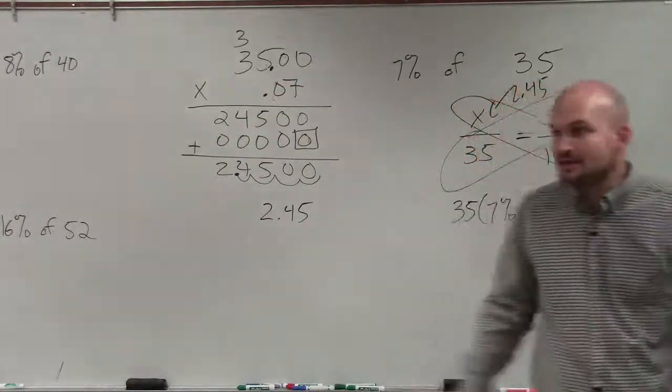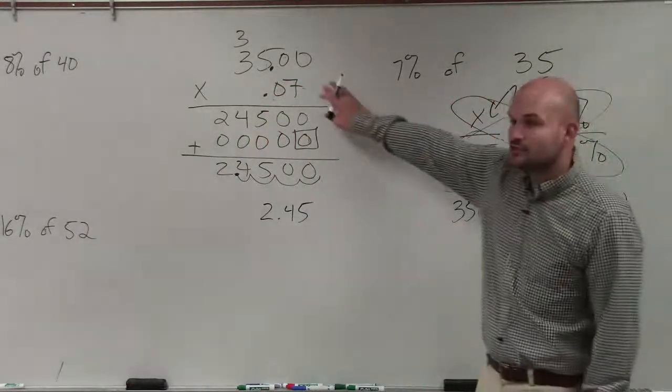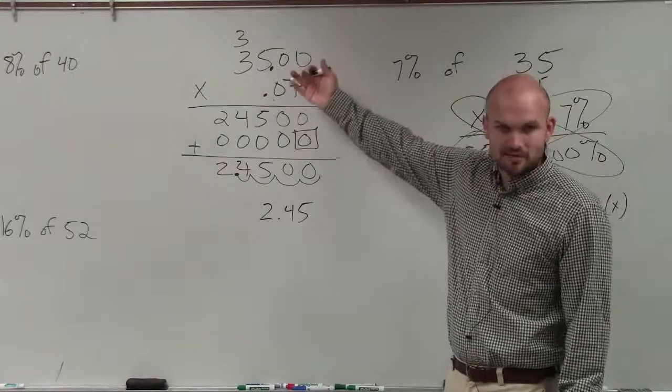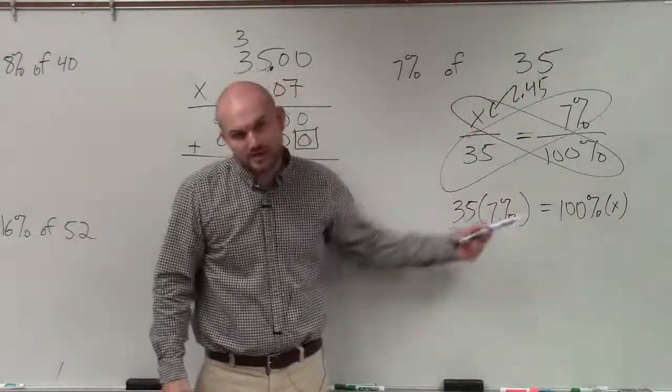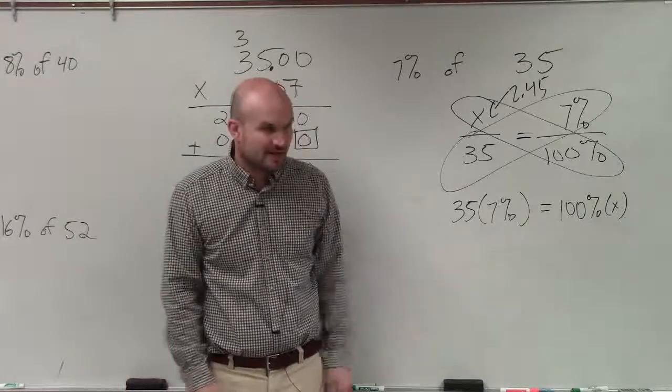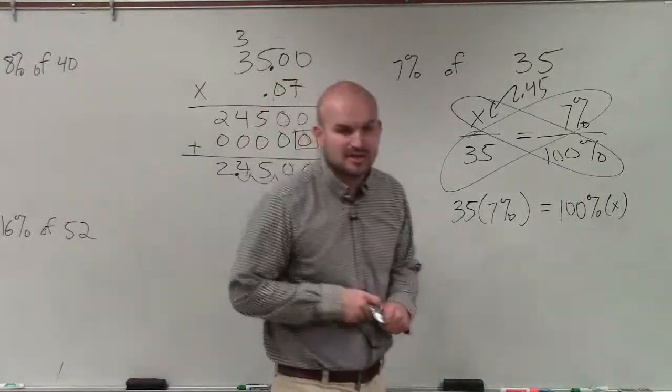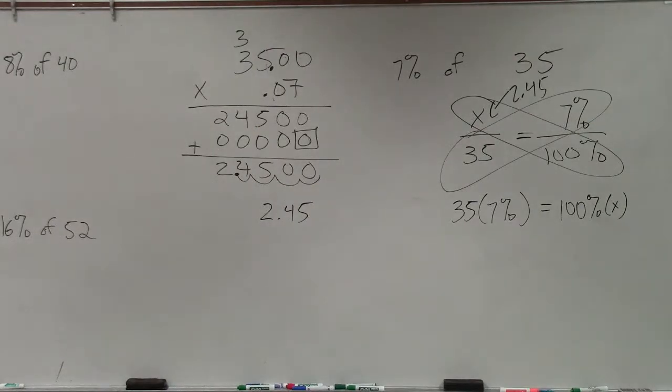2.45 over 35 is the exact same as 7% over 100%. So all basically, ladies and gentlemen, that you're doing is just multiplying your percent times your whole number. You could obviously use this proportion and then solve it from there if you wanted to do that as well. But that's not really as much necessary.